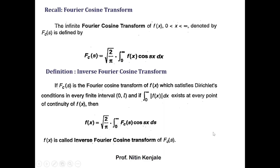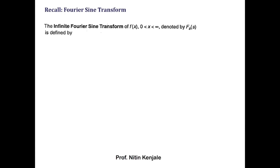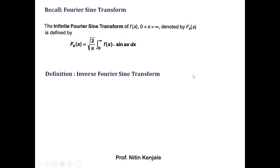On similar lines, we will first recall the Fourier sine transform definition and from that define the inverse Fourier sine transform. The infinite Fourier sine transform of f(x), when x lies between zero to infinity, denoted by F_ss, is defined by root(2/π) into integration of f(x) sin(sx) dx over the limit zero to infinity.